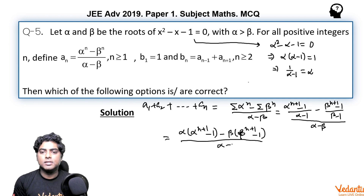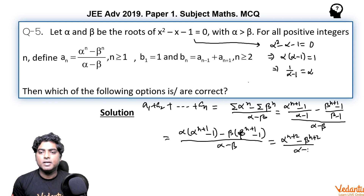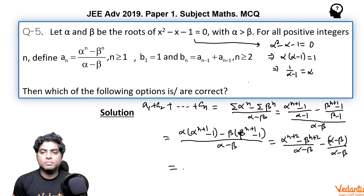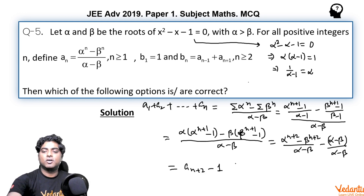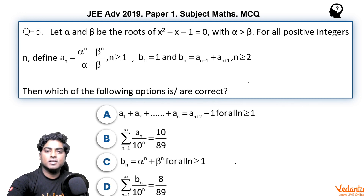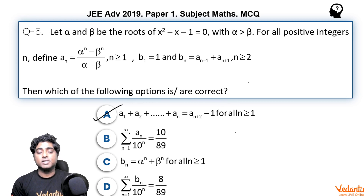After substitution we get (α^(n+2) - β^(n+2)) / (α - β) minus (α - β)/(α - β), which is a_(n+2) - 1. The right-hand side of option A is exactly a_(n+2) - 1, so option A is correct.